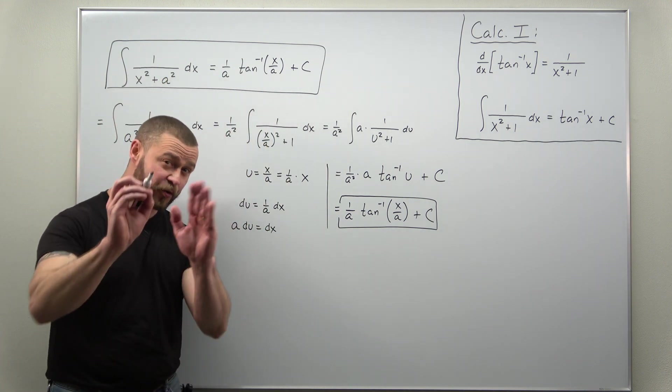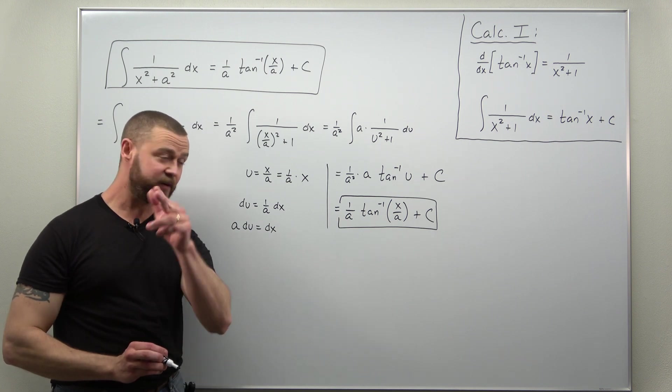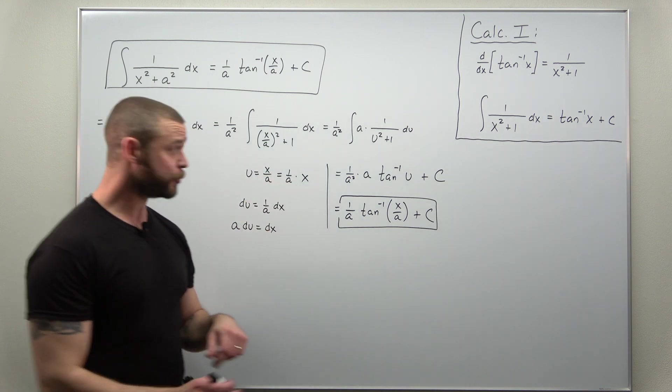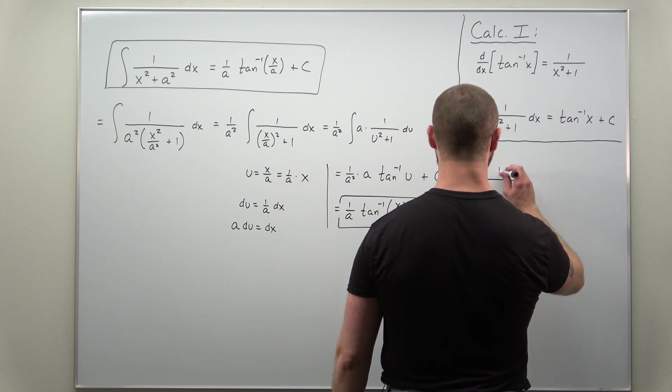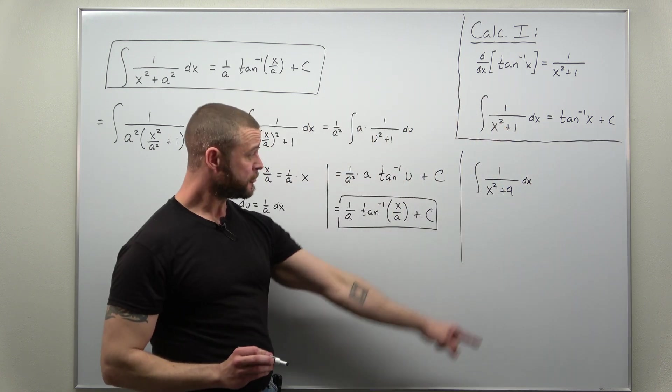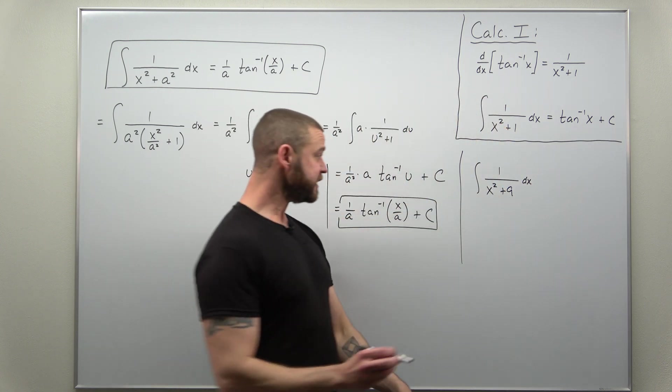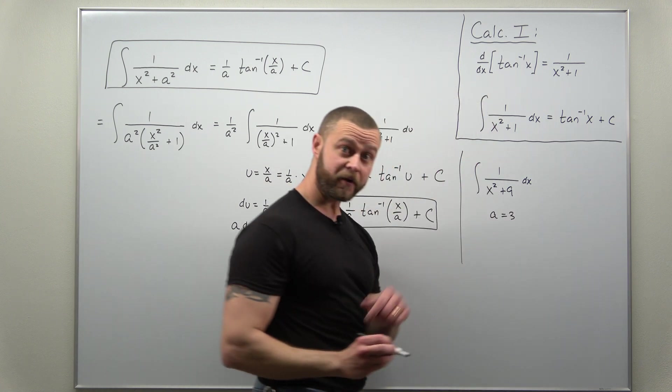And that is an incredibly useful formula. It allows you to find some basic antiderivatives really quickly. Here if we just go through one example, let's say we have the integral of 1 over x squared plus 9.